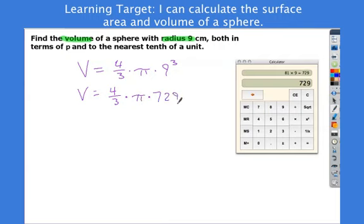9 times 9 is 81 times 9. 9 cubed is 729. So we have four-thirds times pi times 729. Multiplying by four-thirds can be tricky. Multiply the tops, multiply the bottoms. One easy way to remember this: it's the same as taking 729 times 4 and then dividing by 3. Times 4 gives me 2916. When I divide that by 3, I get 972. So volume equals 972 times pi. This says in terms of pi.